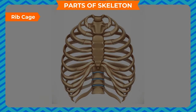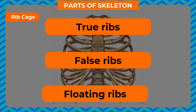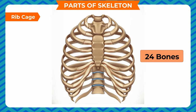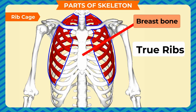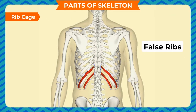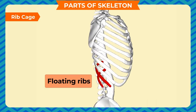Ribcage: The ribcage is divided into three categories — true ribs, false ribs, and floating ribs. The ribs are thin, flat, curved bones that form a protective cage around the delicate organs in the upper part of the body. It consists of 24 bones arranged in 12 pairs. The upper seven ribs are called true ribs as they are directly attached to the breast bone. The next three are called false ribs, joined to the ribs above each other. The last two pairs are called floating ribs as they are not attached to the breast bone.